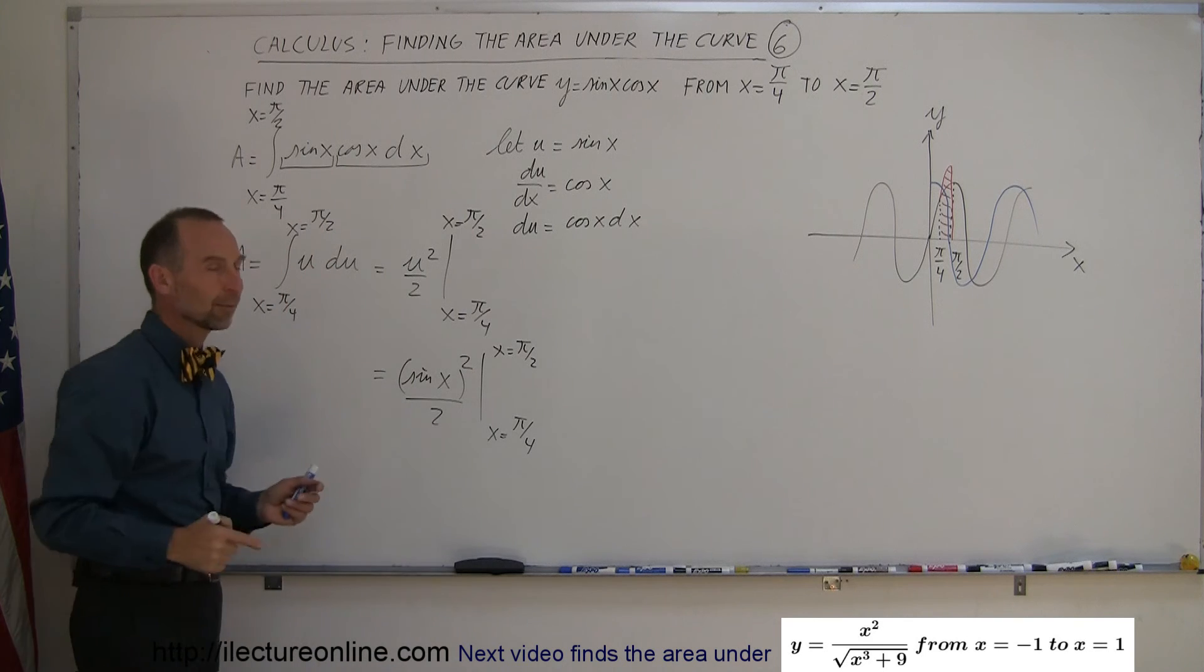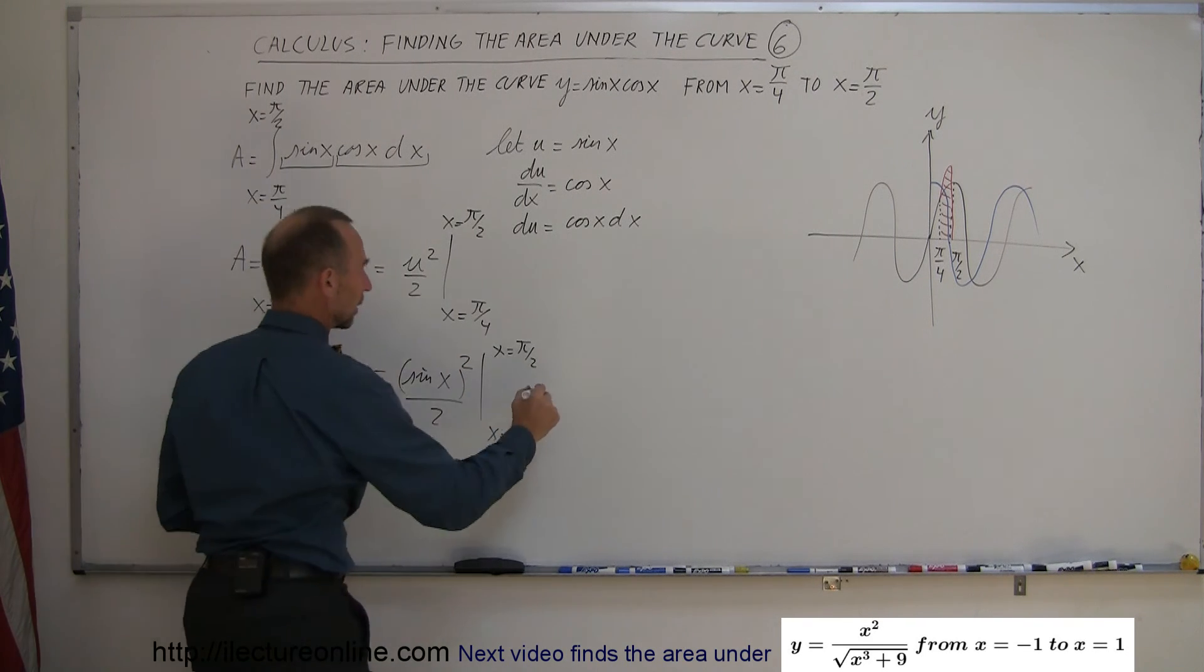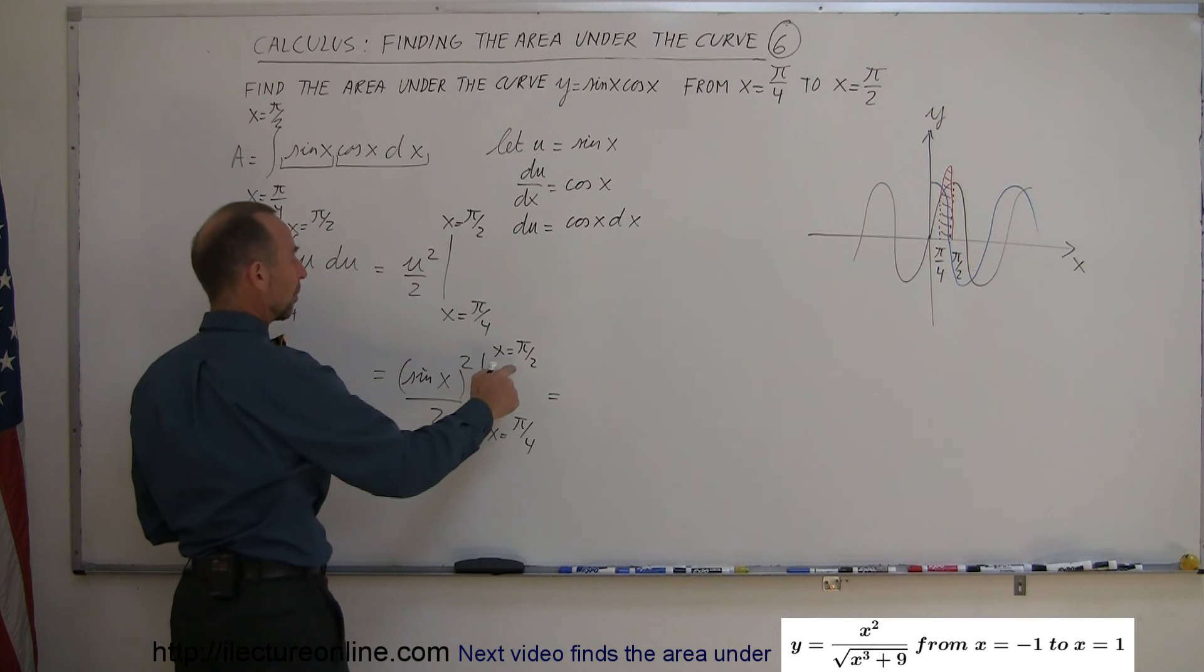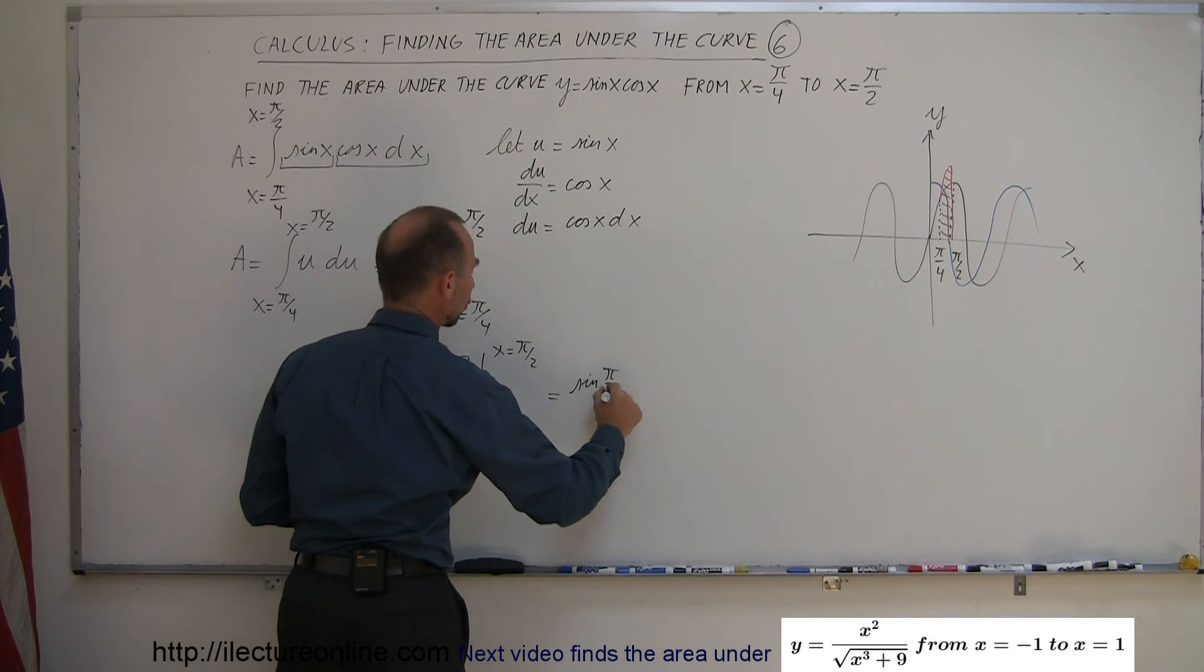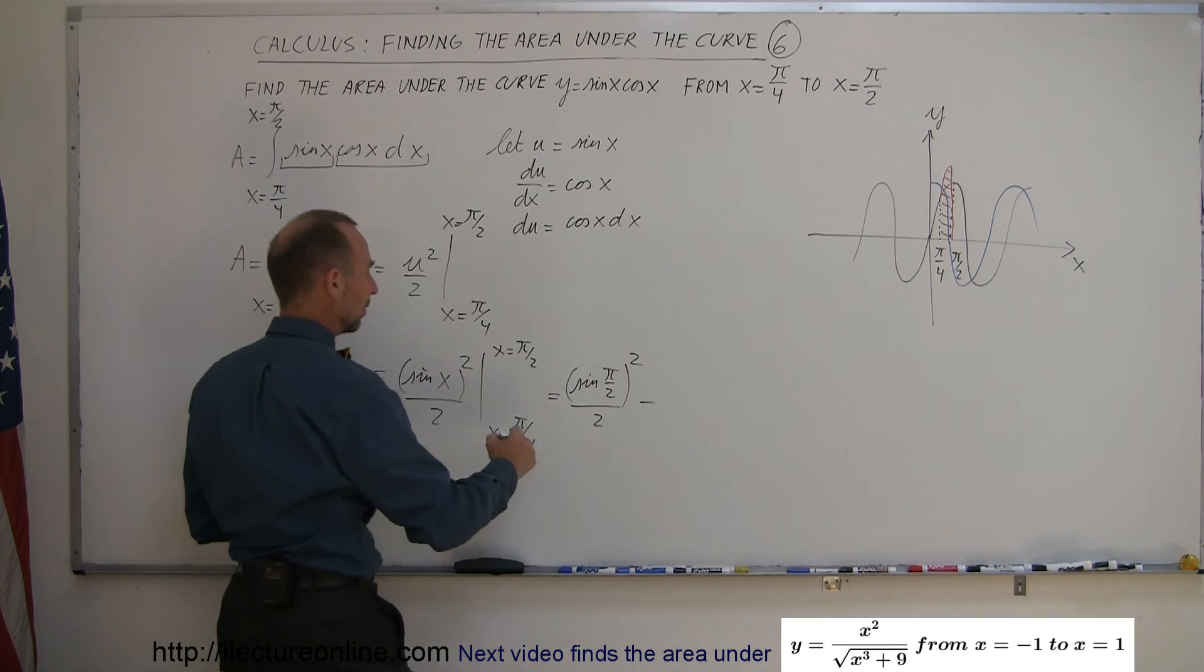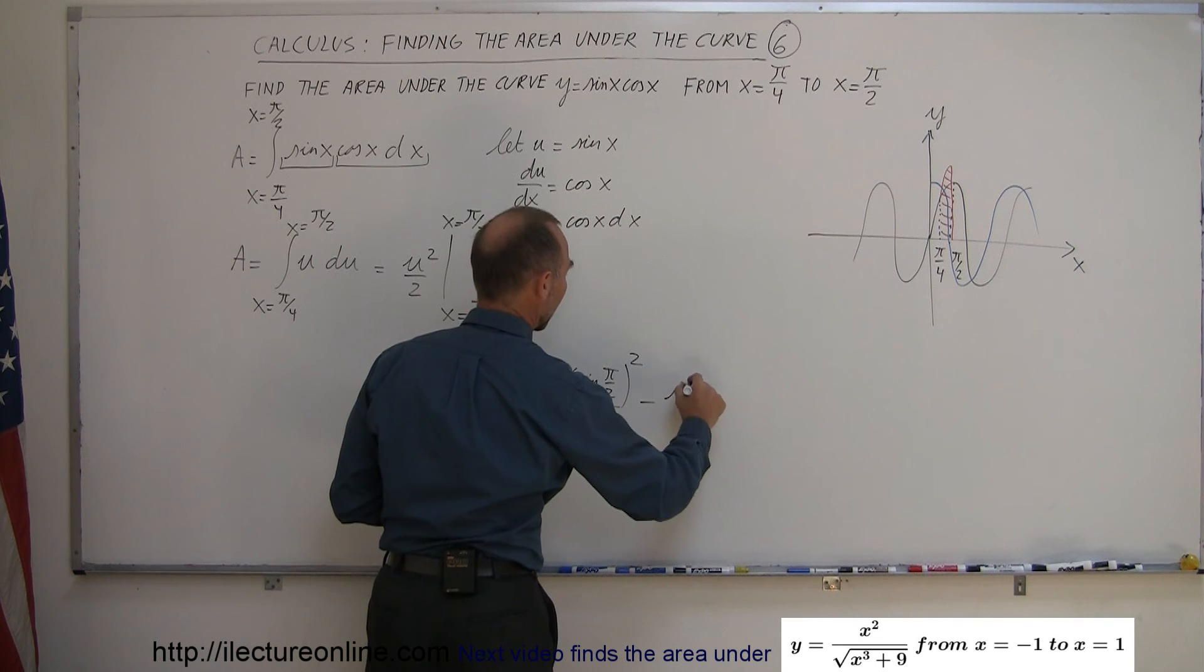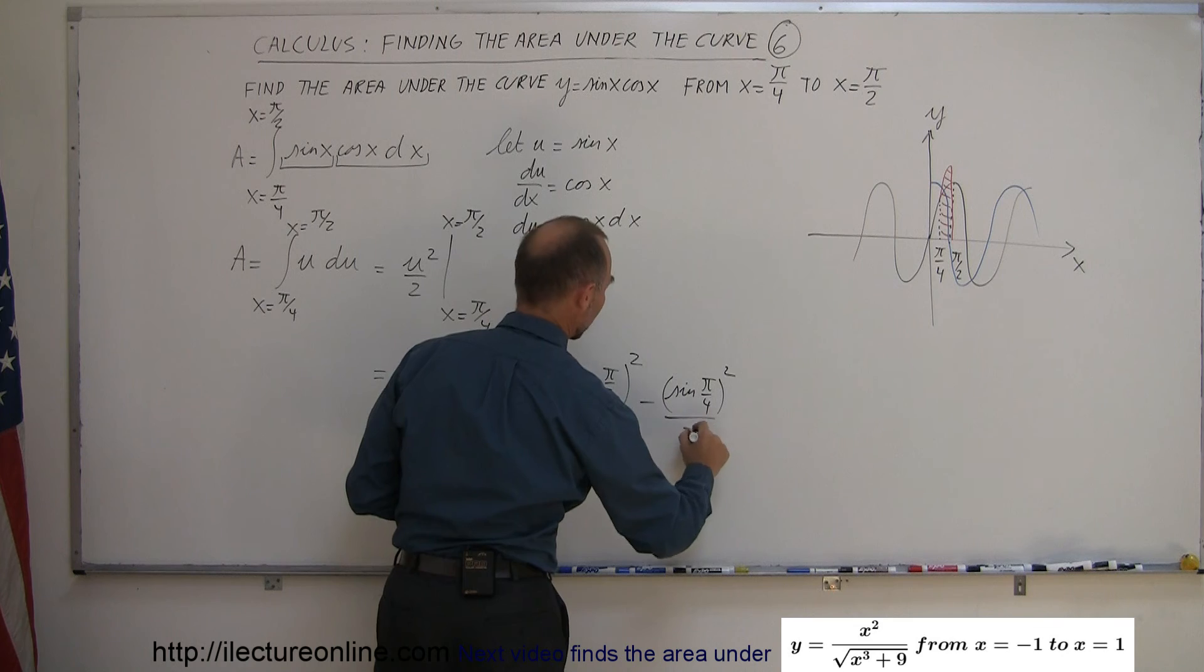Now, I'm ready to plug in my limits because now the variables here match the variables of my limits. Okay, so this is equal to, when we plug in the upper limit, we get the sine of pi over 2 squared over 2 minus, when we plug in the lower limit, that would be the sine of pi over 4 squared divided by 2.